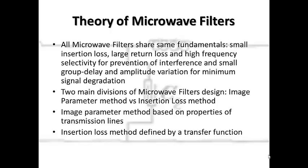There are two main divisions of microwave filter designing. First is the image parameter method. Second is the polynomial method, also known as the insertion loss method. The image parameter method is based on properties of transmission lines. Whereas the insertion loss method, which most microwave filters nowadays are based on with the help of computer-aided design, is defined by a transfer function. This transfer function is the ratio of output voltage to input voltage of the filter. An ideal low pass filter has a constant magnitude function in the pass band and zero in the stop band.